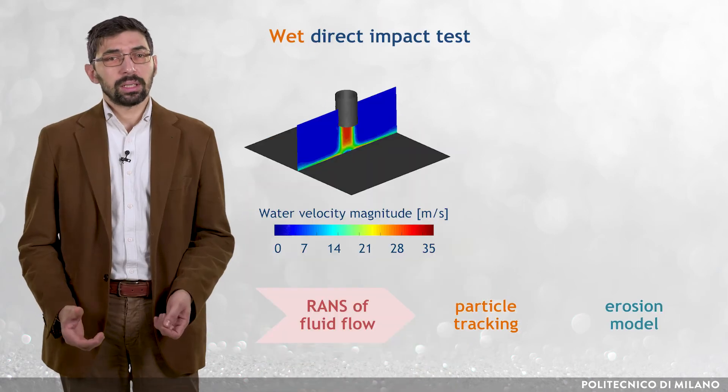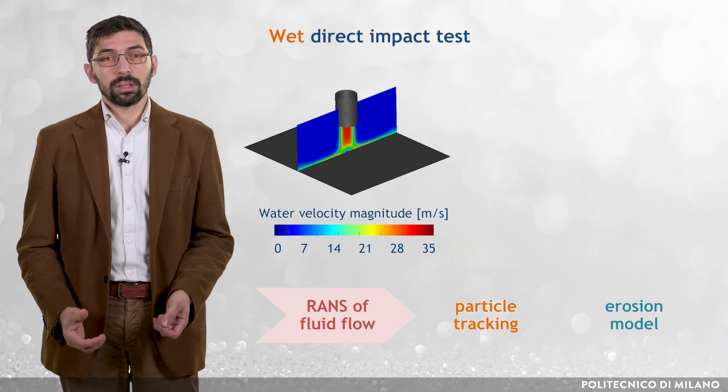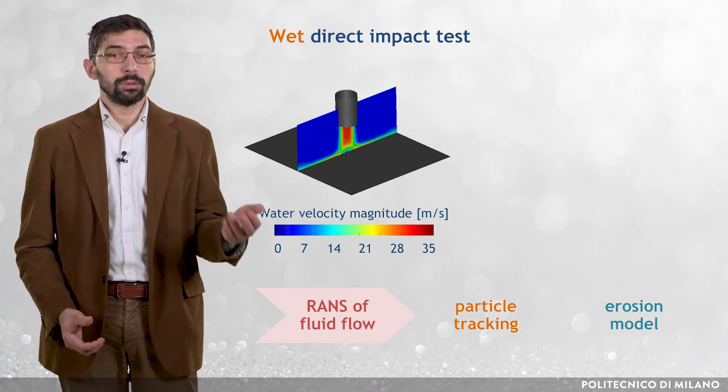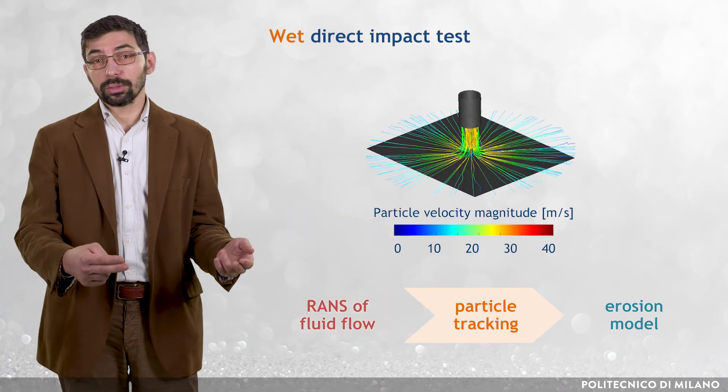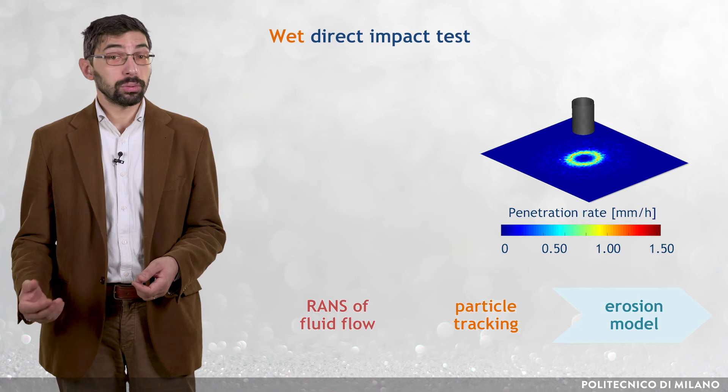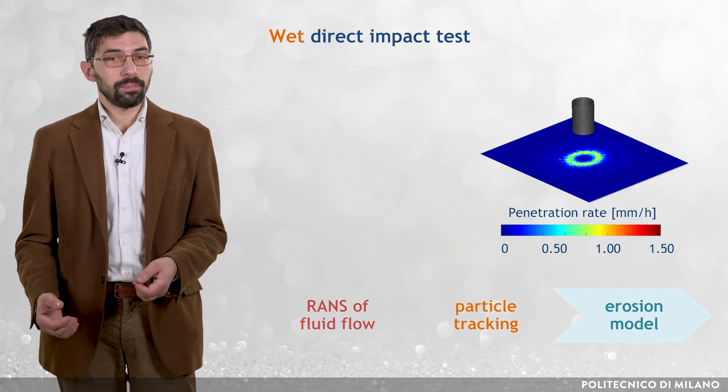The methodology described so far can be used to predict the steady-state erosion of dilute flows in simple and complex geometries. For instance, here you can see an application of this procedure to the simulation of a wet direct impact test, including fluid flow computation, particle tracking, and calculation of the penetration rate map, which shows the typical W shape.